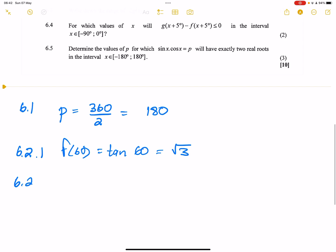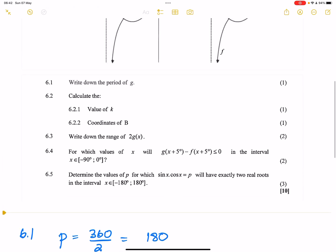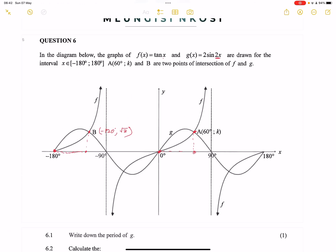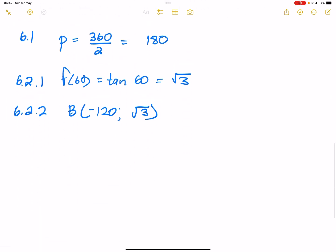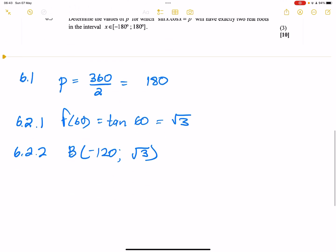Let's write them out, 6.2.2. So b has to have the coordinates negative 120 as well as root 3. So they say to us, write down the range of 2g(x). Now, already g(x) has got the amplitude of 2. So in this case, it means that g exists between negative 2 and 2. But now, if we double that, obviously that will be between negative 4 and 4. So that means that y would be an element of negative 4 to 4, which is twice of g.